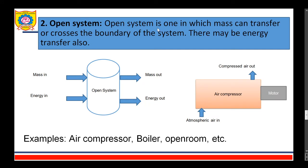An open system is one in which mass can transfer across the boundary of the system. There may be energy transfer also. So if you consider this as the open system, mass will be entering into the system and mass will be going out of the system, and there may be energy in or energy out. Examples of this are an air compressor, boiler, turbine, or an open room. The air compressor is considered as the open system because atmospheric air enters the air compressor across this boundary, and after compression, it goes out of the thermodynamic system.